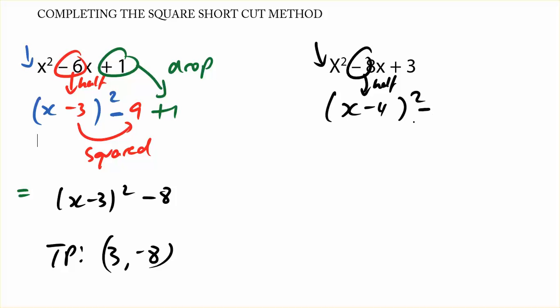After brackets, I always put a negative. And then I square this number. So negative 4 squared is 16. And I drop the plus 3 term. So get a plus 3 there.